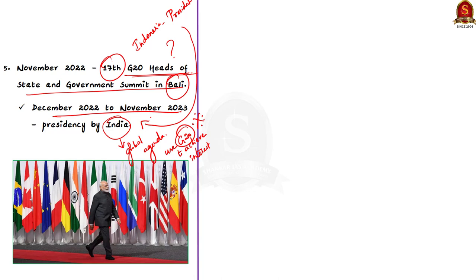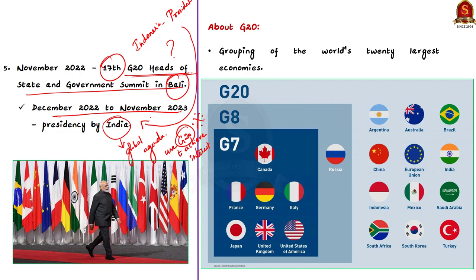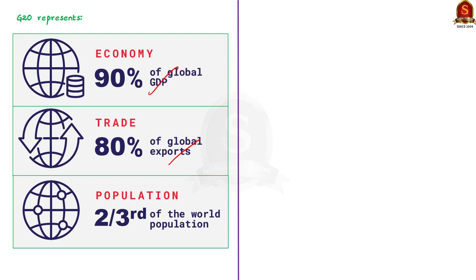G20 stands for Group of 20 — a grouping of the world's 20 largest economies. Its members include 19 countries and the European Union. The 19 countries are Argentina, Australia, Brazil, Canada, China, France, Germany, India, Indonesia, Italy, Japan, Republic of Korea, Mexico, Russia, Saudi Arabia, South Africa, Turkey, United Kingdom and the United States of America. These member countries represent almost 90% of global GDP, 80% of international trade, two-thirds of world's population and 84% of fossil fuel emissions. G20 was formed in 1999 with the main objective of gaining international cooperation on important issues of the global economic and financial agenda.